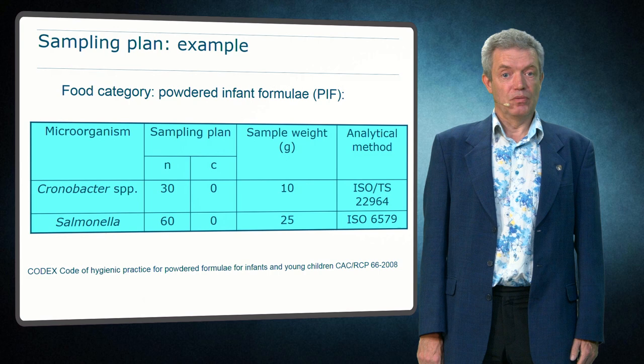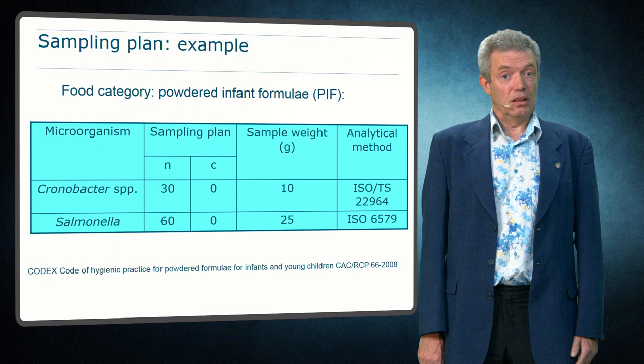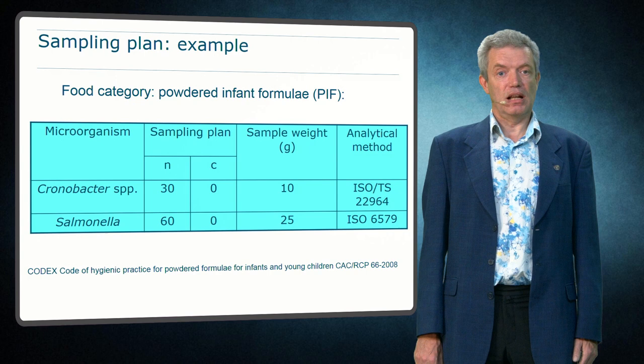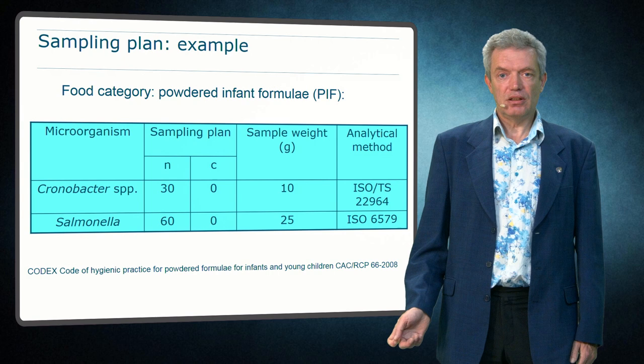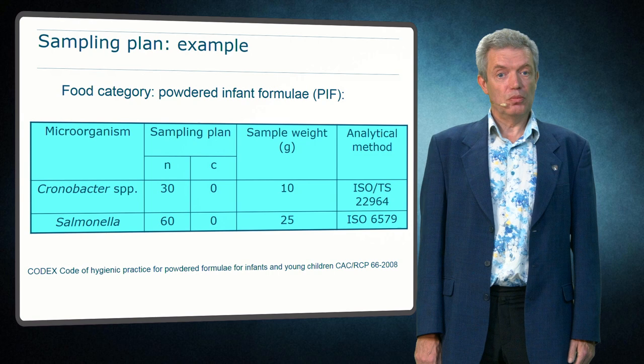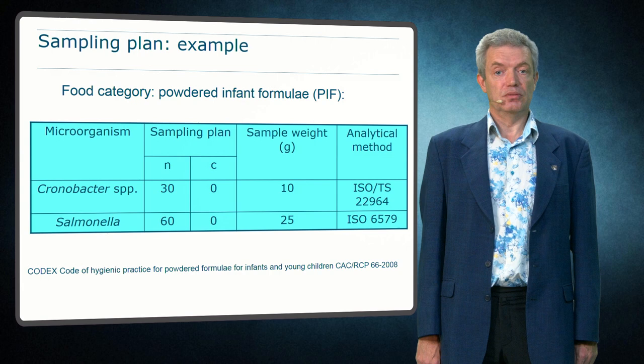On this slide you see a sampling plan for powdered infant formula, which includes information for Cronobacter and Salmonella. Notice that in this sampling plan description you see much more than only absence of Cronobacter and Salmonella. The absence can be found in the column for C, which says C equals zero for both pathogens. In addition to this, the number of samples N is defined, as well as the sample weight and the analytical method used. All these aspects together define the plan.